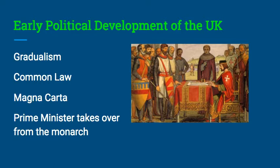The English Bill of Rights, which your book doesn't emphasize as much, is also considered part of this set of founding documents. From 1689, it promised free elections, gave rights to the accused, guaranteed free speech, and protection from cruel and unusual punishment. Both the Magna Carta and the English Bill of Rights gave three key ideas: representative government, limited government, and individual rights.